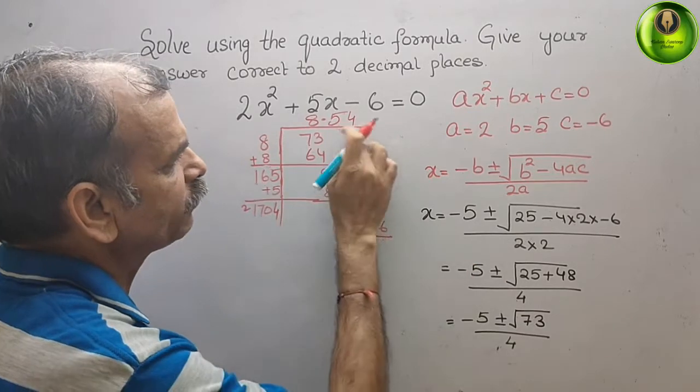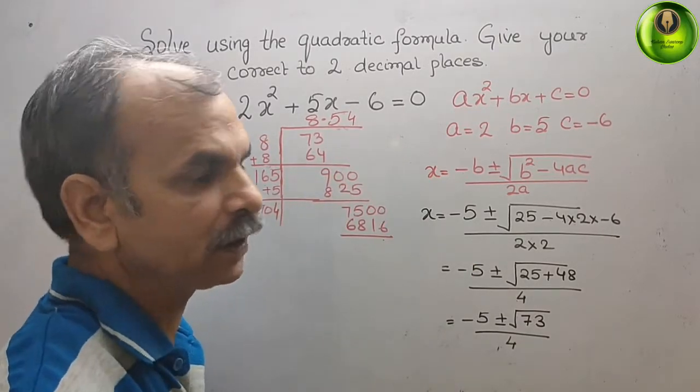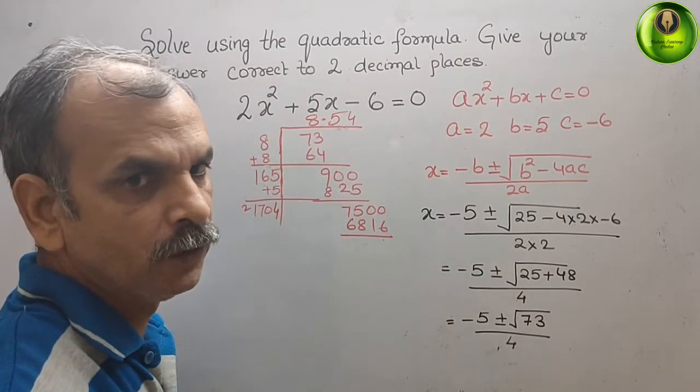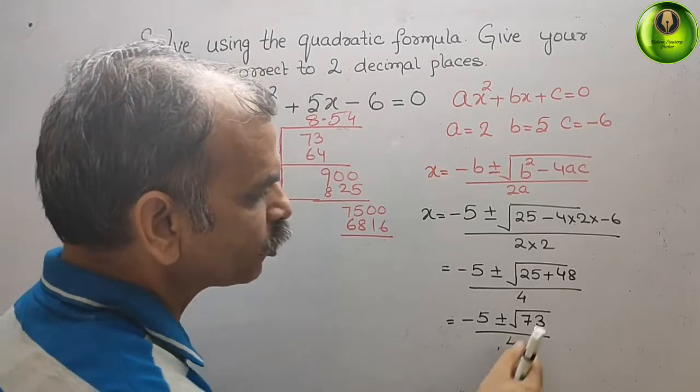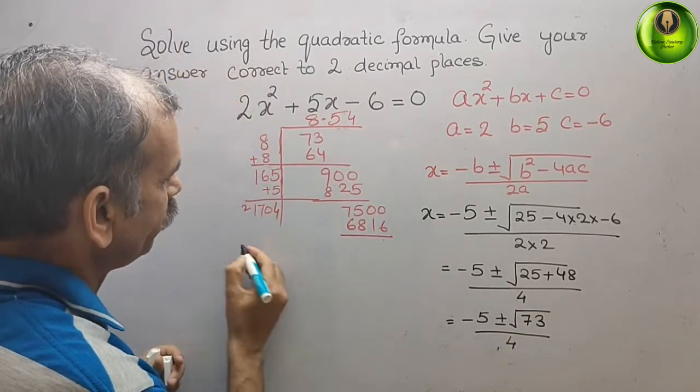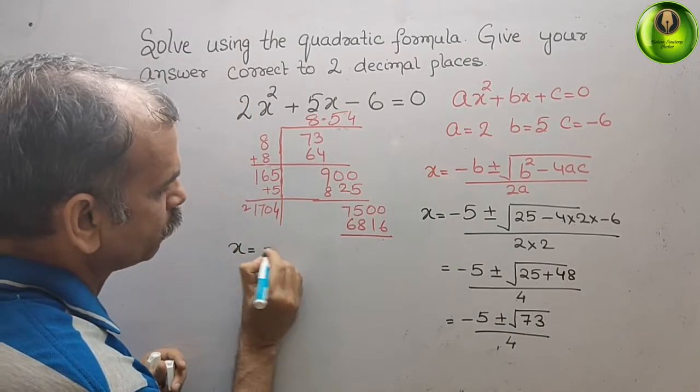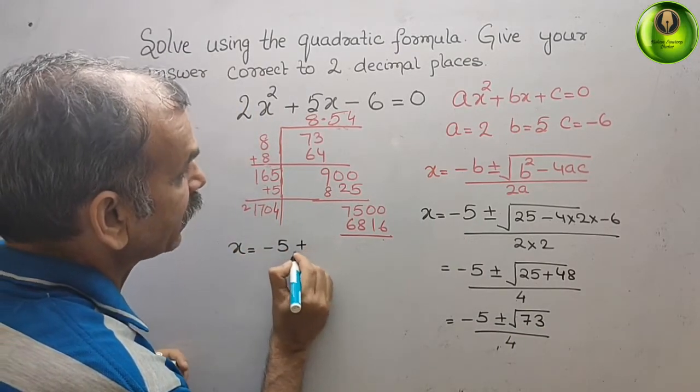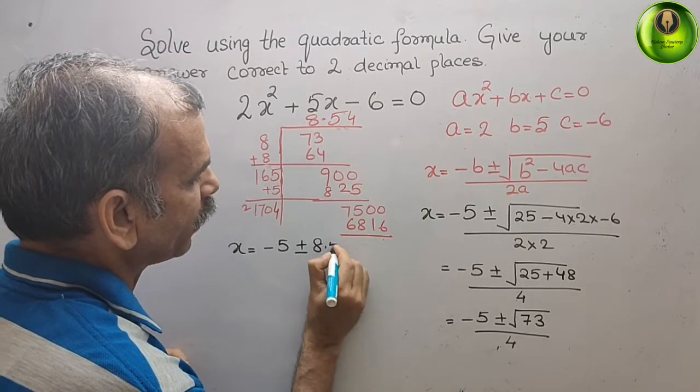Now what we have to do? We have to substitute this value here. Therefore we will get x = (-5 ± 8.54) / 4. So first we will take a positive value.